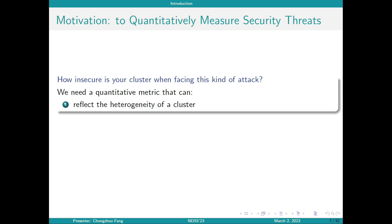So then it raises this question: can we quantitatively measure the security threat the cloud providers and users are facing? As we mentioned before, the satisfaction of the prerequisite of collocation attack is closely related to heterogeneity. If we are able to quantitatively measure the heterogeneity of a cloud infrastructure, we will be able to answer how insecure your cluster is when facing this kind of attack.